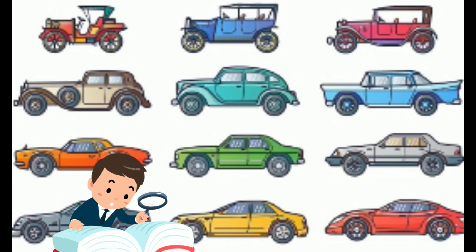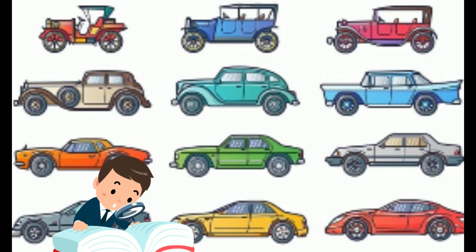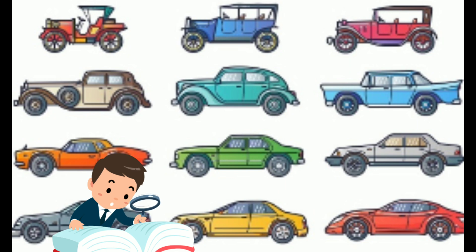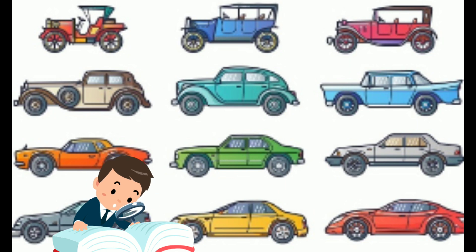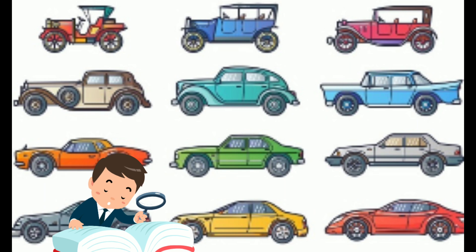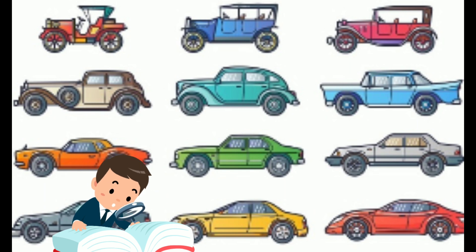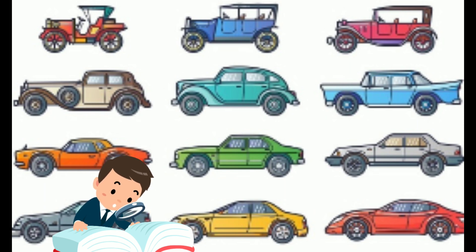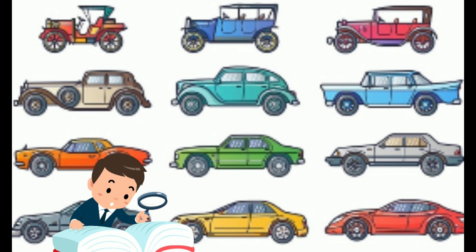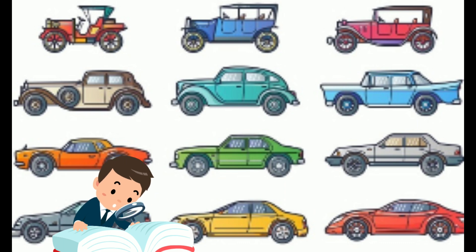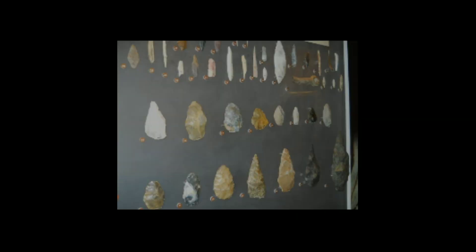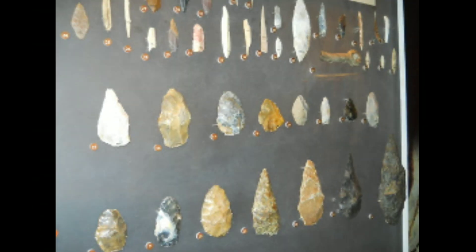For example, looking at cars, we can see that cars have changed in form and function through the years. Knowing this, we can place a car in time by merely looking at its form. Characteristics used for comparison include morphology and raw materials in the case of stone tools, and decorative techniques and motifs in the case of ceramics.